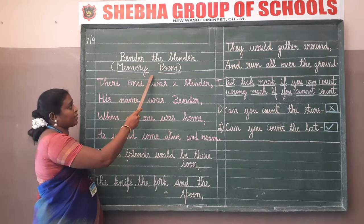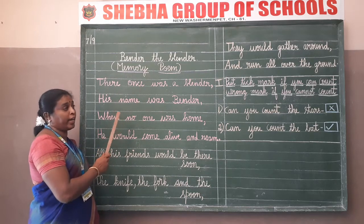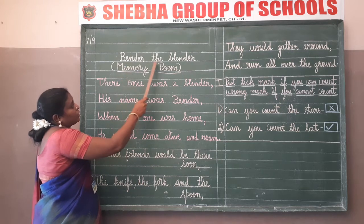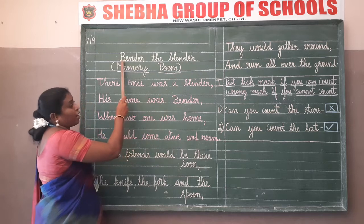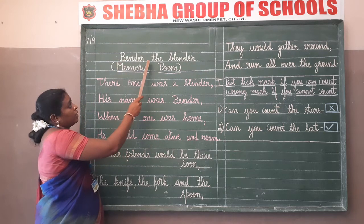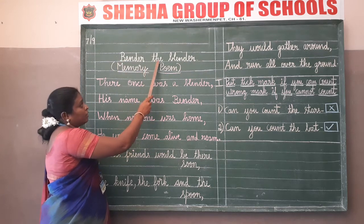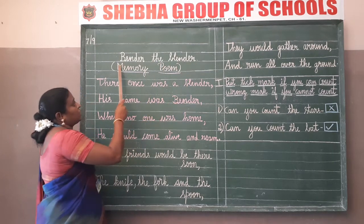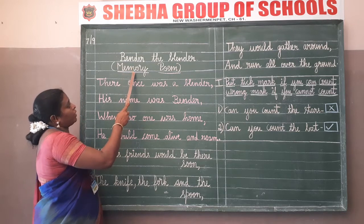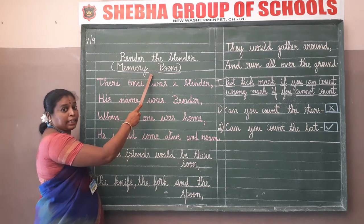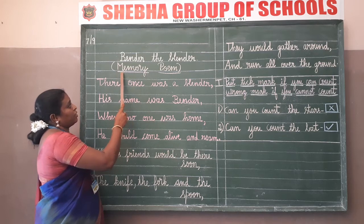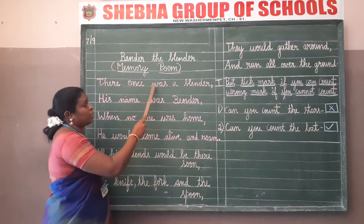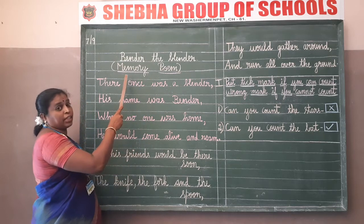Now we are going to write the heading of the poem: Bender the Blender. Start with the capital letter, leave finger space, then write 'the', then finger space, then write 'Blender'. It is a memory poem. In the next line, put a bracket and write 'memory poem'. Clear students.